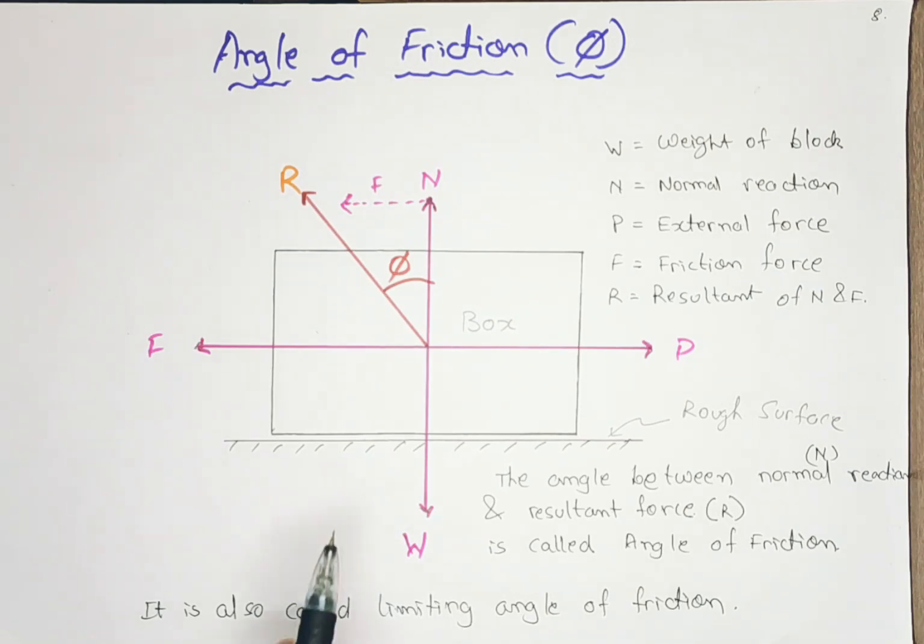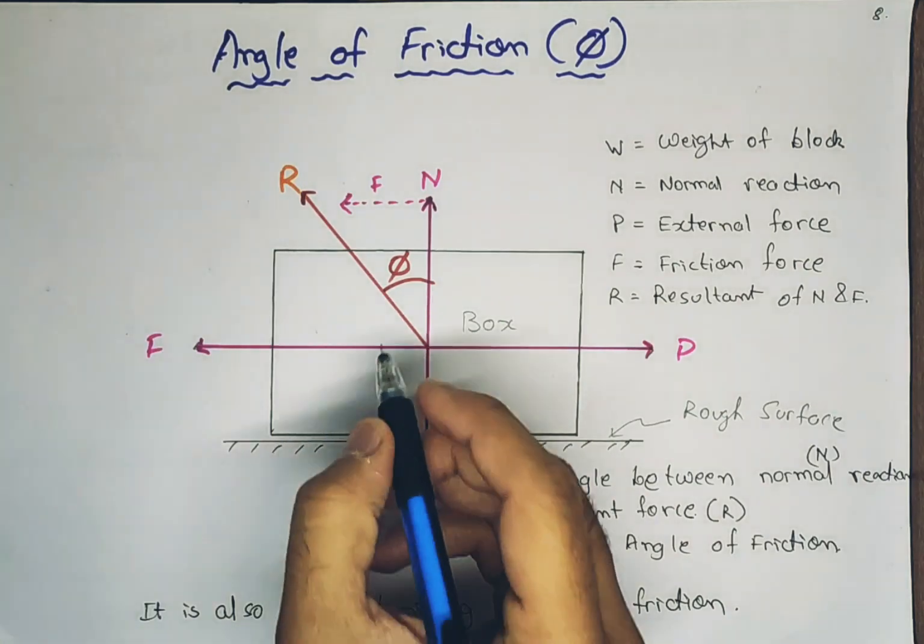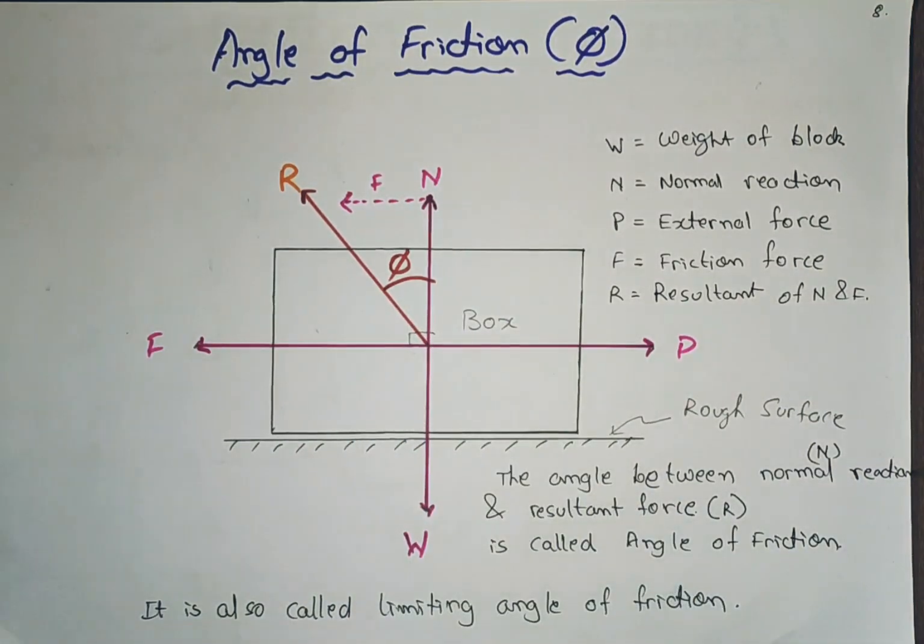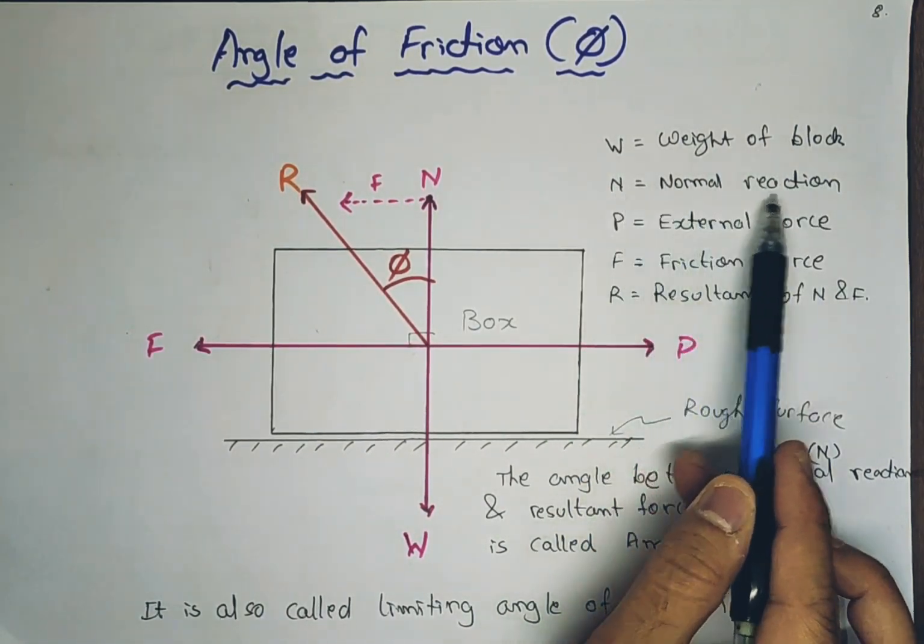And the fourth component is the normal N, which acts perpendicular and opposite to the weight, that is normal to the surface. So if we consider this rough surface, the normal will act 90 degrees from it. So these are the basic four components, where W is the weight of the block and N is the normal reaction.